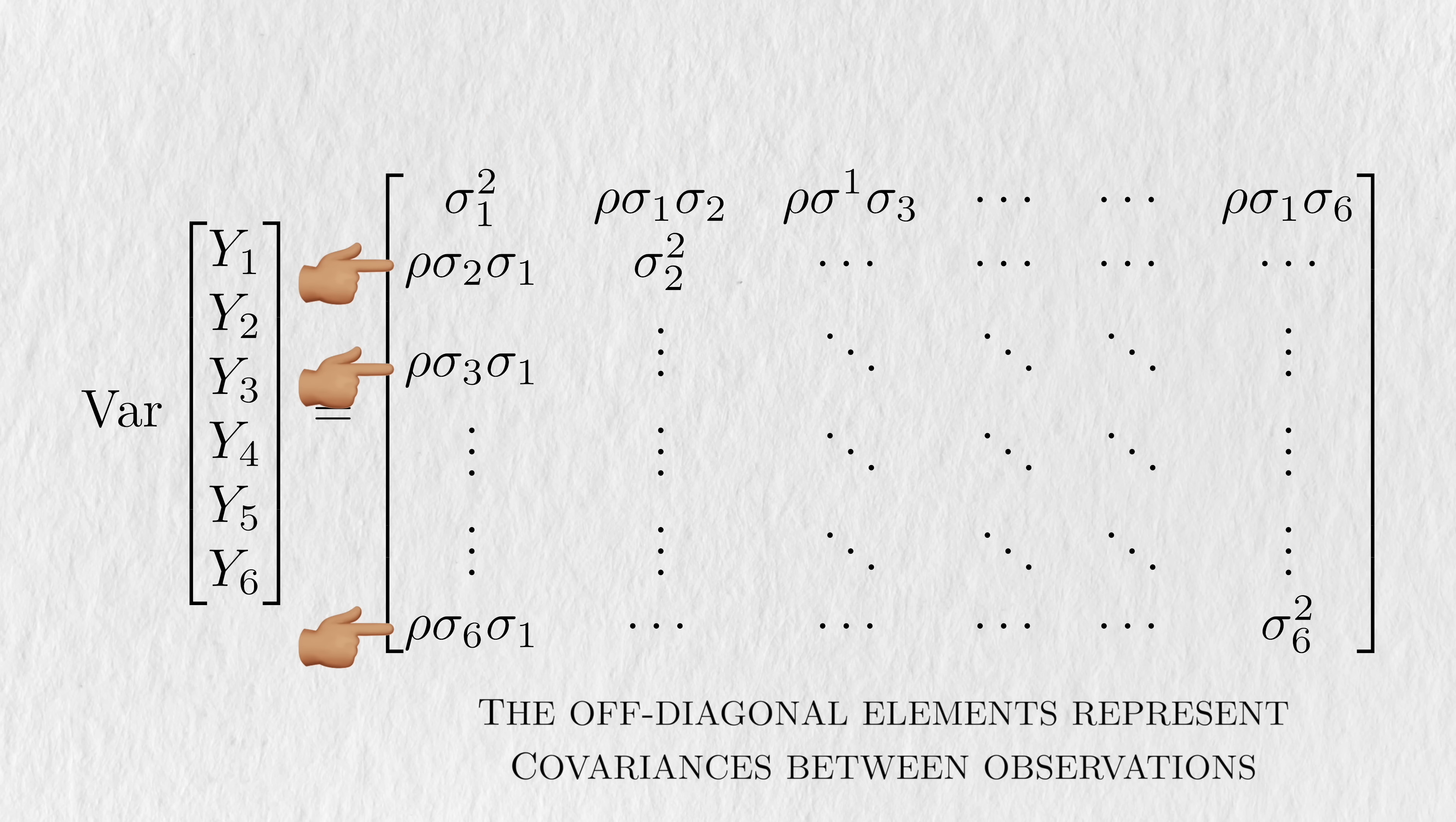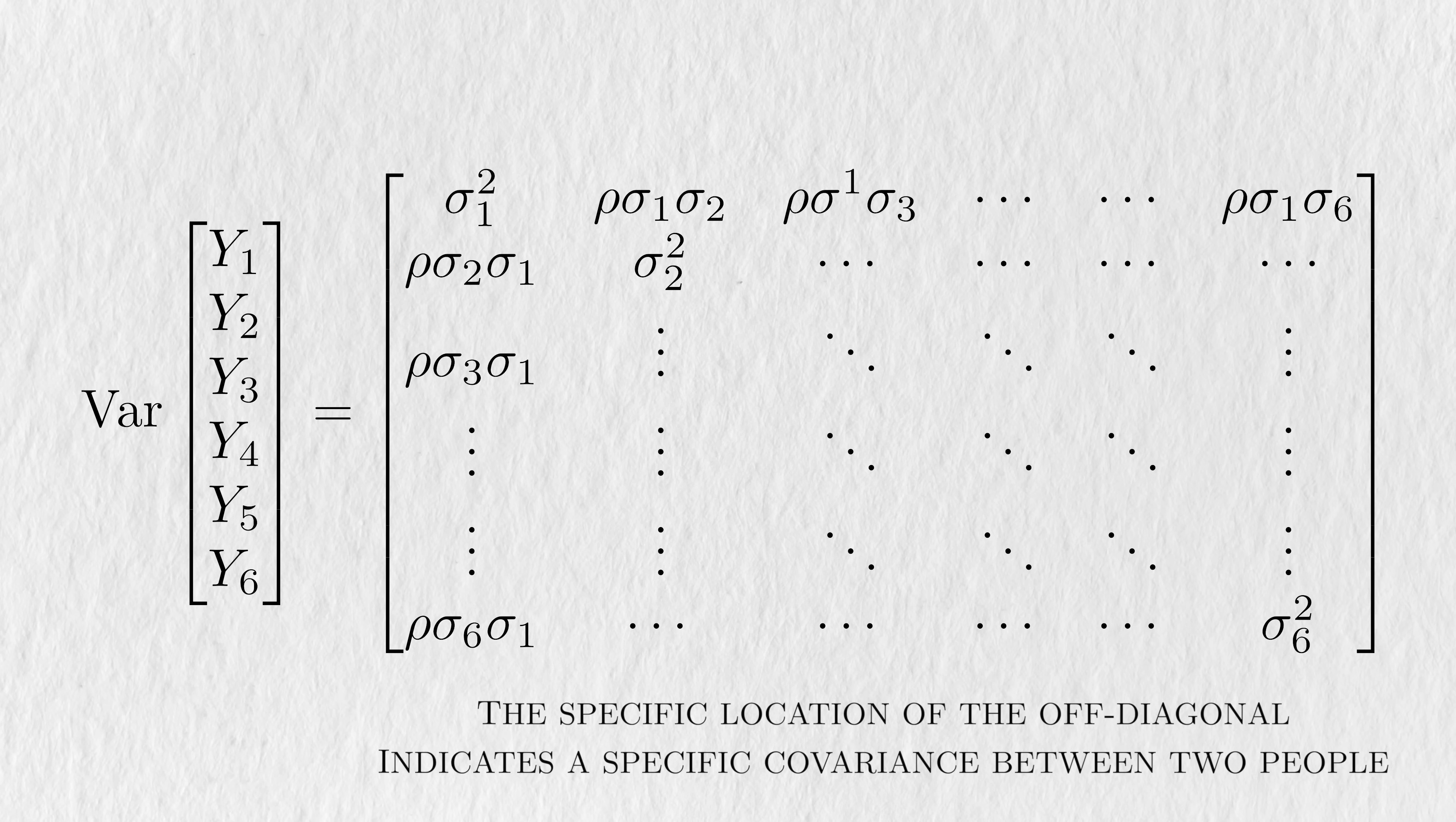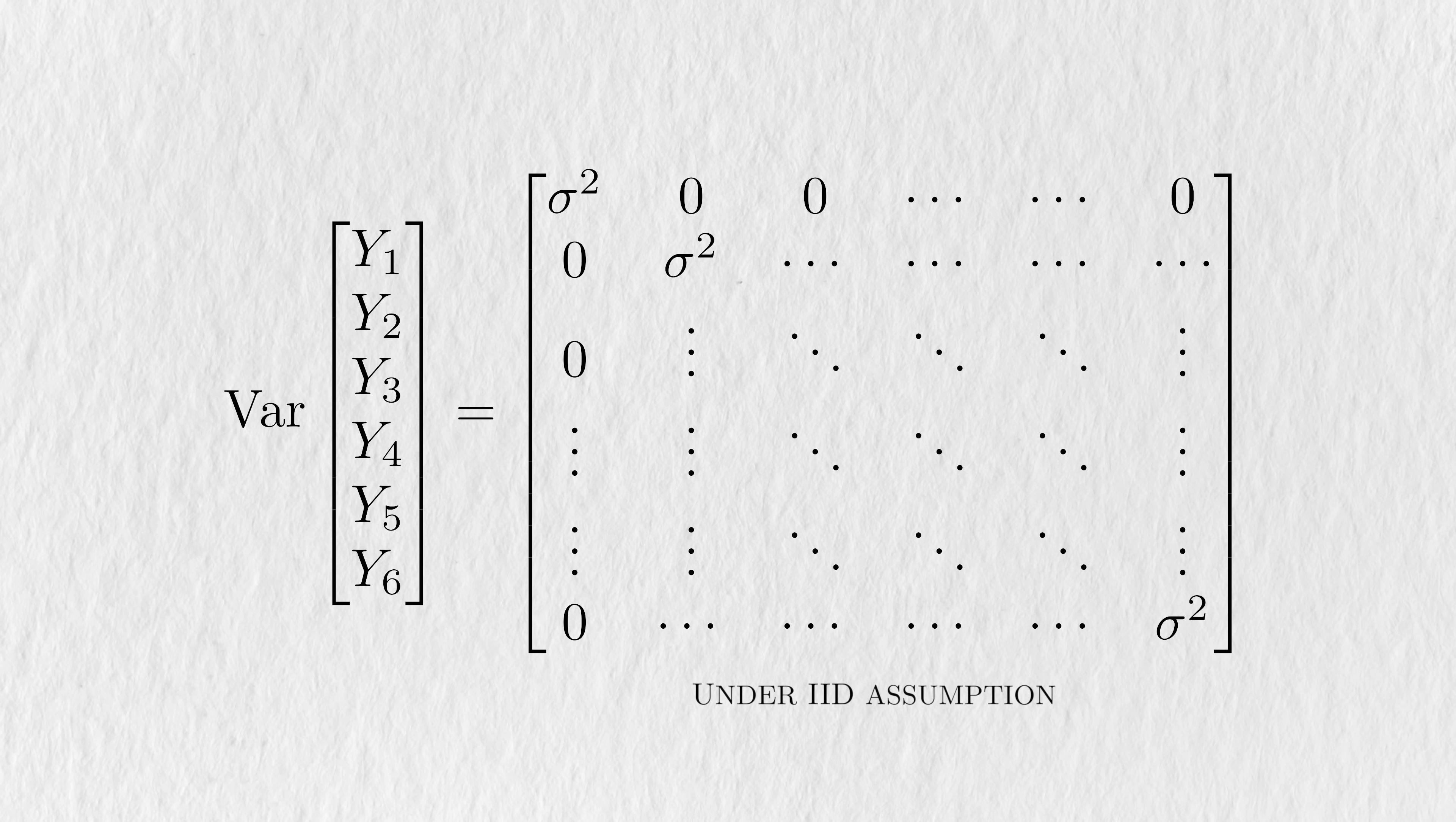Usually, the off-diagonal values represent how much the data between two people will vary with each other, or co-vary. For this reason, the entire matrix is given a special name, the covariance matrix. Despite its name, it contains both variances and covariances. Covariances are calculated as the product of the standard deviations for each person and the correlation between them. The specific location of the off-diagonal indicates a specific covariance between two people. So this element represents the covariance between the first and third person. This is what a covariance matrix looks like in general, but it's greatly simplified by the IID assumption. In statistical terms, this means that the covariance between any two people is zero, which means that the covariance matrix under IID data is just a simple diagonal matrix. If your covariance matrix looks like this, then it's a hint that you have IID data. With this matrix visual in mind, you're ready to understand the problem of longitudinal data better.